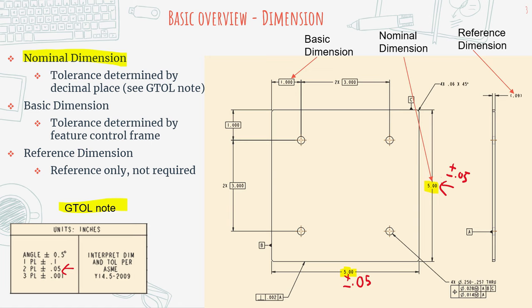The next type is basic dimensions. Basic dimensions are theoretically perfect dimensions. A basic dimension is typically boxed — that's how you know it's a basic dimension, and how we physically represent it. But the actual location is not precise. Looking at this hole feature, we have a dimension of one inch by one inch with basic dimensions, but the actual location of the hole is going to be determined by the feature control frame. So even though we say this is one inch by one inch, the actual location of the hole might be slightly different.